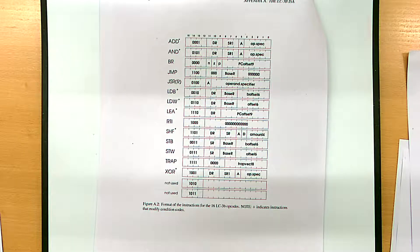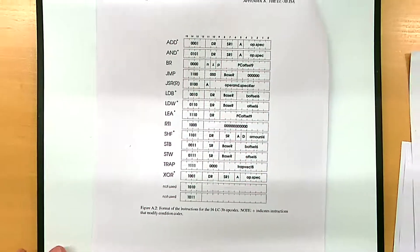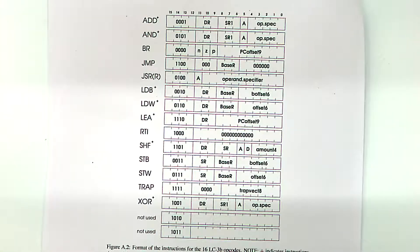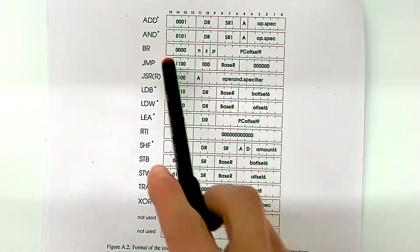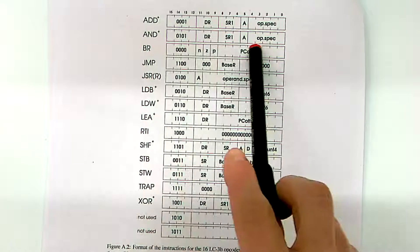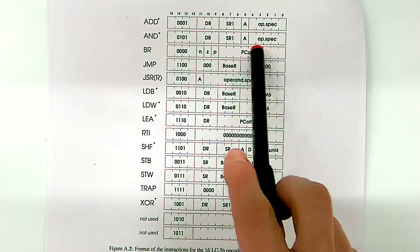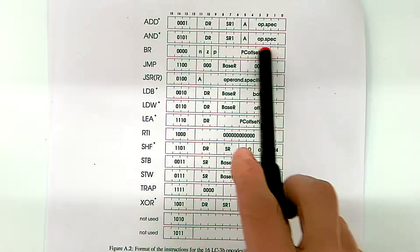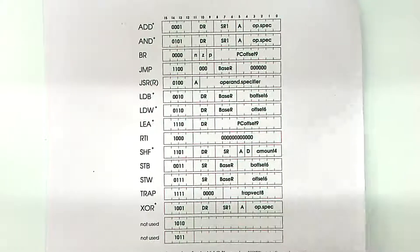The address calculation adder — it looks complicated, but one way of calculating the address is taking the program counter and adding to it some sign-extended immediates coming from different portions of the instruction register, depending on which instruction in the ISA is being executed.